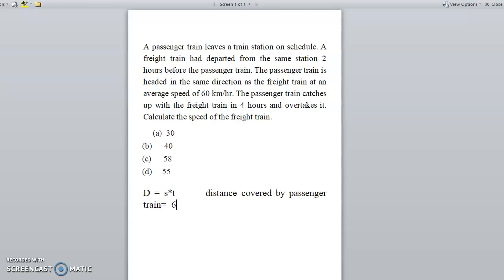What is the speed of the passenger train? 60 kilometers per hour. What is the time it takes? 4 hours. So what is the total distance? 240 kilometers.